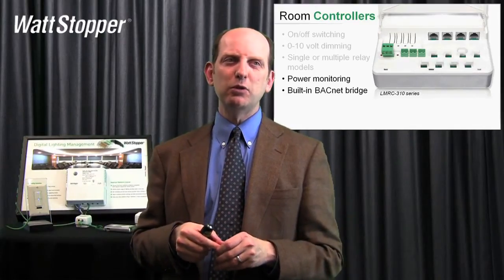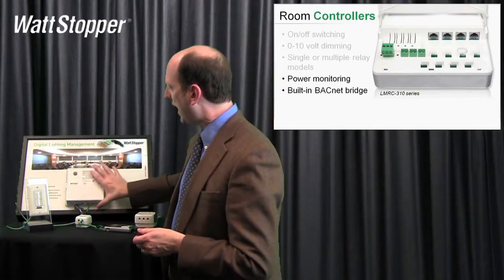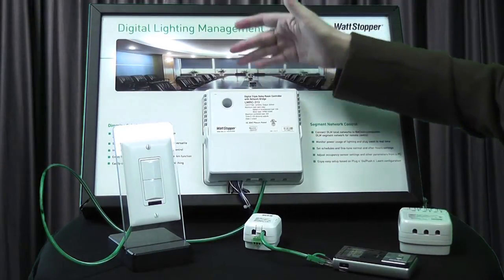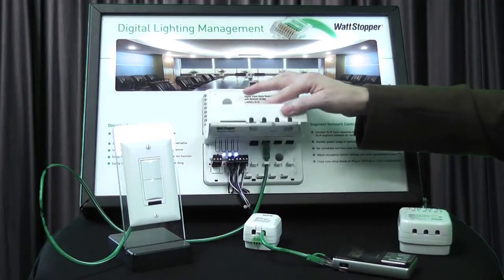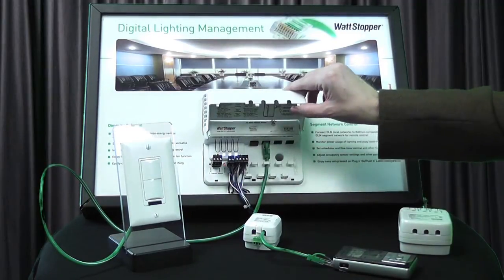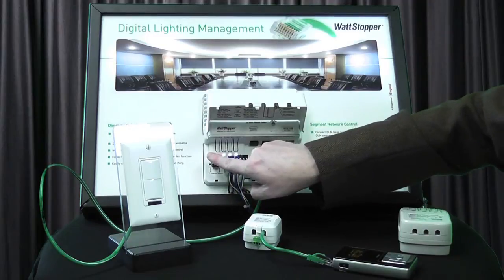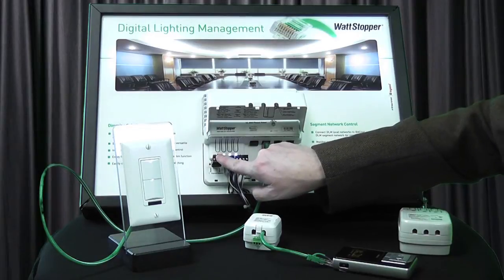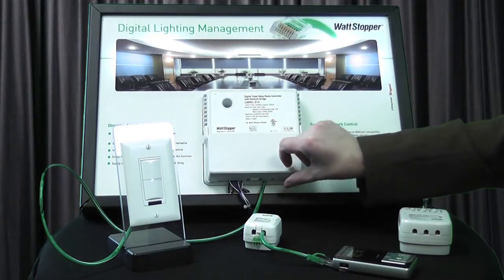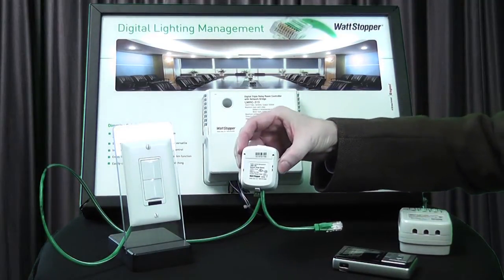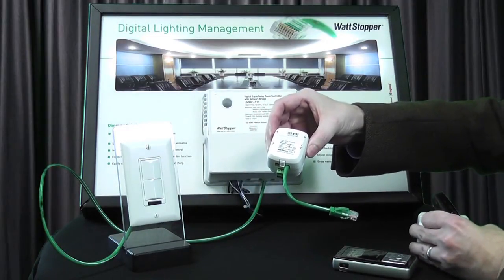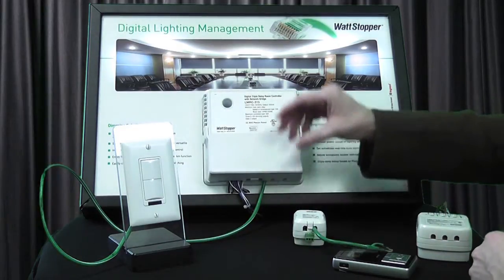Let's now talk a little bit about the room controllers. What we talked about before was that on the 300 series room controller, it's got on-off capability through its relays, it's got zero to ten volt dimming capabilities. Two things we want to point out: on the 300 series there is a network bridge that's built in, and that's what this set of terminals is for. Here's where an integrator would be able to bring their BACnet MSTP communication wire to talk to this device. There's also a separate network bridge module that would normally go with something like an LMRC 102 or a 200 series — but with the 300 series you get that built in.